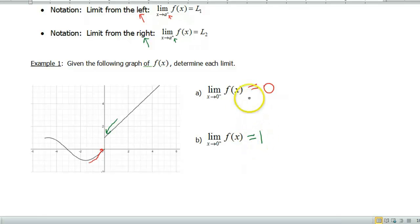Now because these two limits are not the same, we could say that the limit as x approaches 0 without a plus or a minus of our function does not exist. Only because these two values are different.